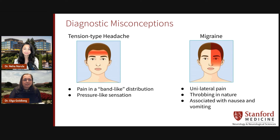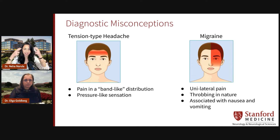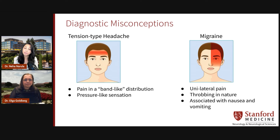Migraine can also have the same band-like, pressure-like features as tension-type headache. I think that's actually where a lot of us get tripped up. We think, classically, tension headaches are band-like and migraines are unilateral. But you're saying not necessarily — migraines can also have band-like features or happen bilaterally? Exactly.